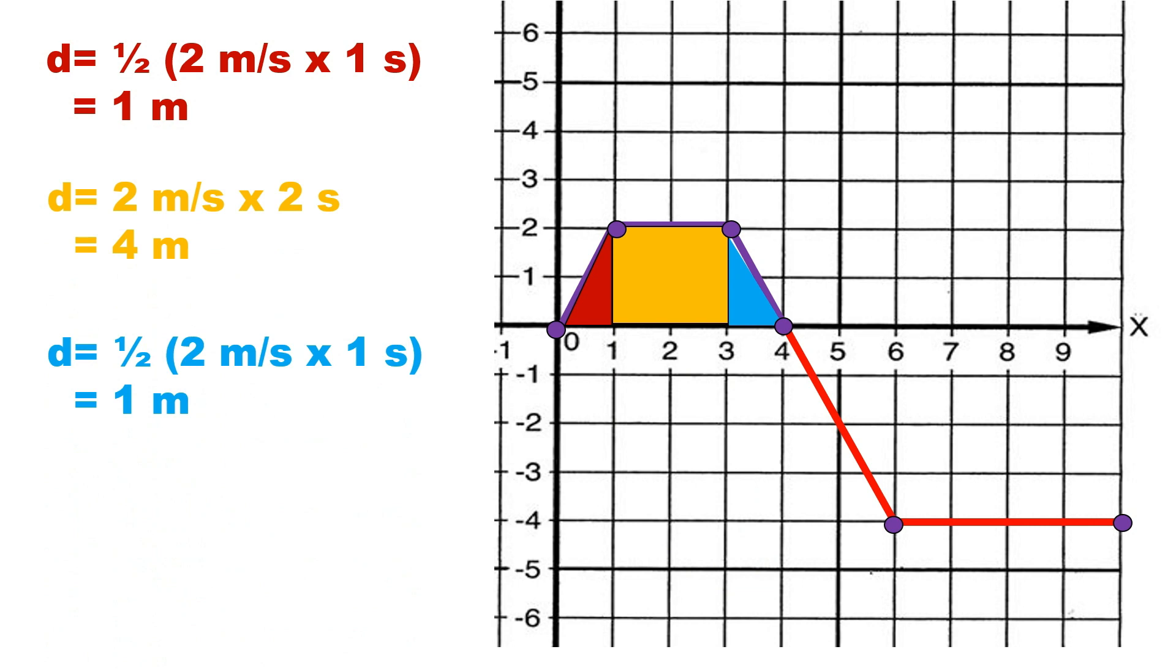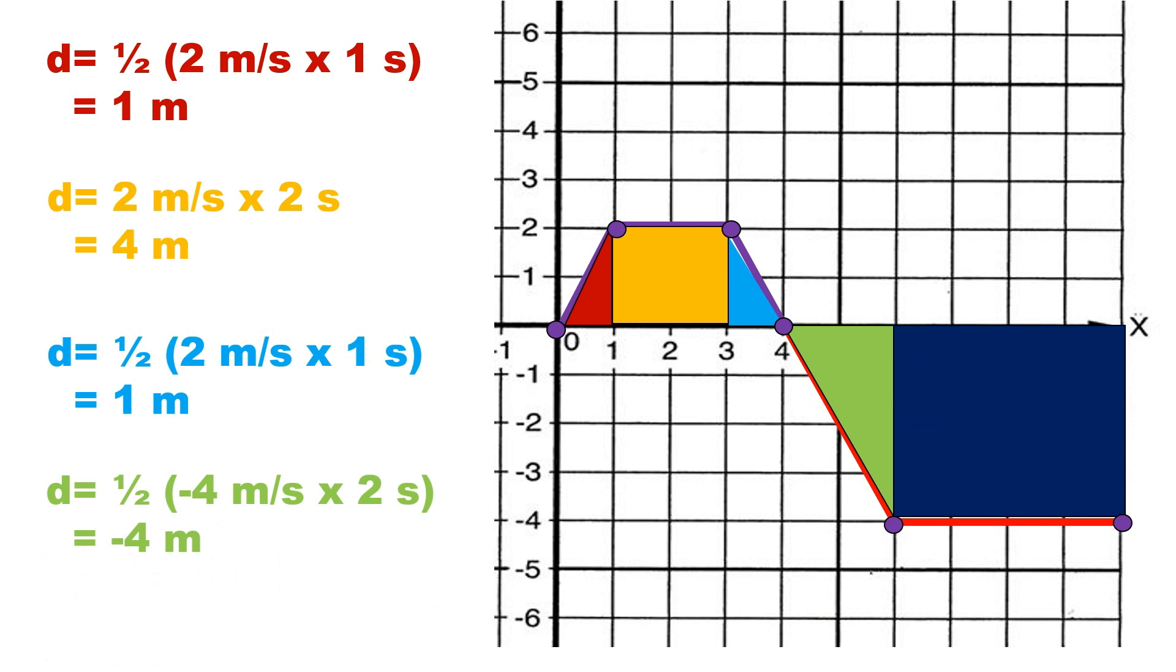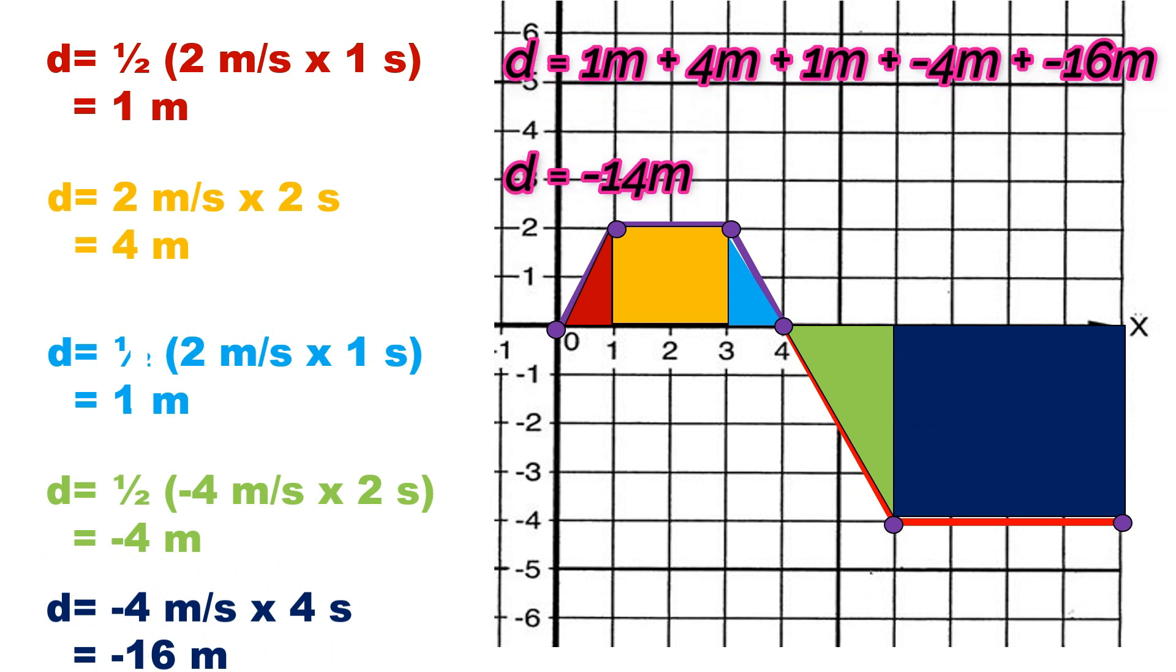This gives us positive 1 meter. Now for some negative displacement. Since we headed downward past 0, the velocity turns negative. We see a triangle, which gives us negative 4 meters. Since based on the formula, we just multiply the 1 half to its base, which is 2 seconds, to the height, which is negative 4 meters per second. This gives us a negative answer. Lastly, the rectangle measures to be negative 16 meters, since we multiplied negative 4 meters per second to 4 seconds. The total displacement after 10 seconds is just the sum of all displacements, which is equal to negative 14 meters.